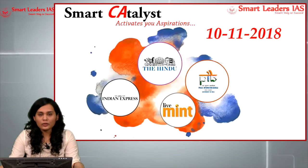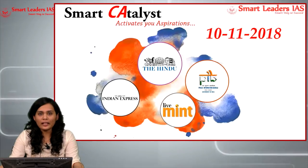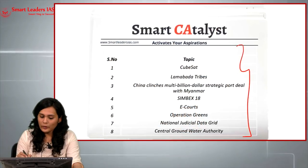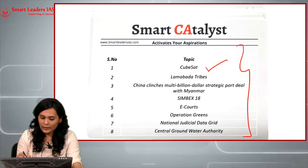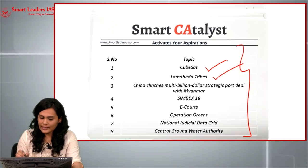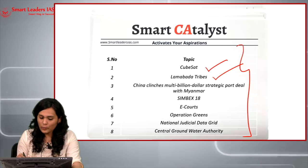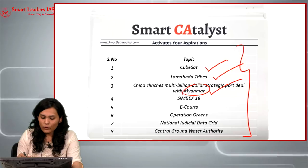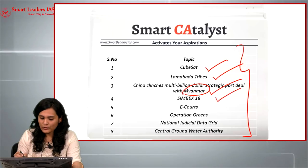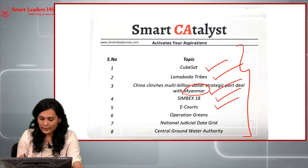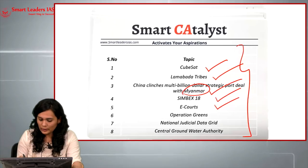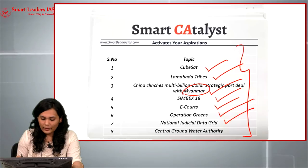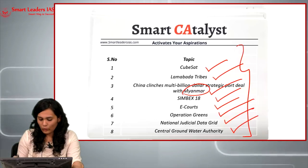Hello friends, welcome to SmartCatalyst. Today we will be seeing the current affairs of 10th November 2018. The eight articles we'll be covering are: cube satellites, lambada tribes, China's new multi-billion dollar strategic port in Myanmar, the naval exercise SIMBEX, e-courts, Operation Green, National Judicial Data Grid, and Central Groundwater Authority.